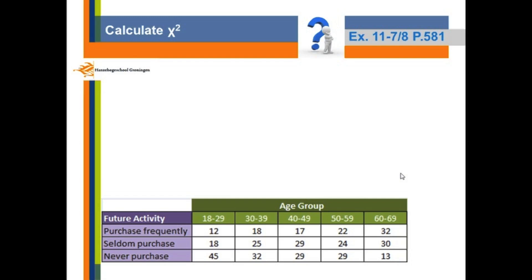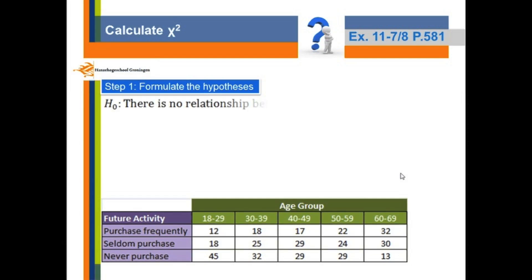In order to get the chi-square, the first step is to formulate your hypothesis. In comparison with our previous study, the hypothesis for the chi-square is different. You need to use your words to formulate that, rather than the Greek letters. So the null hypothesis will be: there is no relationship between future activity and age group. That means these two variables, future activity and age groups, are independent.